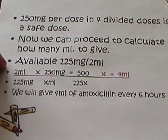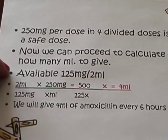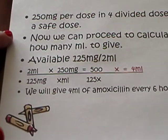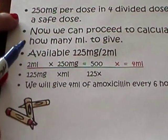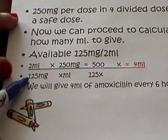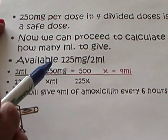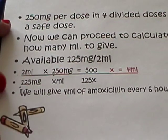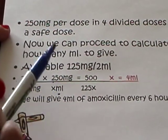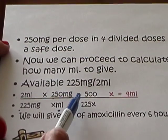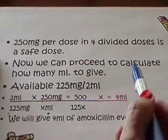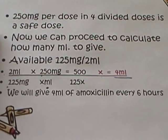We have available 125 milligrams per two milliliters of suspension. So we look at our label. Remember, the first fraction is always what's available, and the volume is our numerator. So two milliliters over 125 milligrams — that's what's available. What do we want to give? 250 milligrams. And we're solving for how many milliliters we will deliver. We get 500 divided by 125; we will administer four milliliters of suspension.